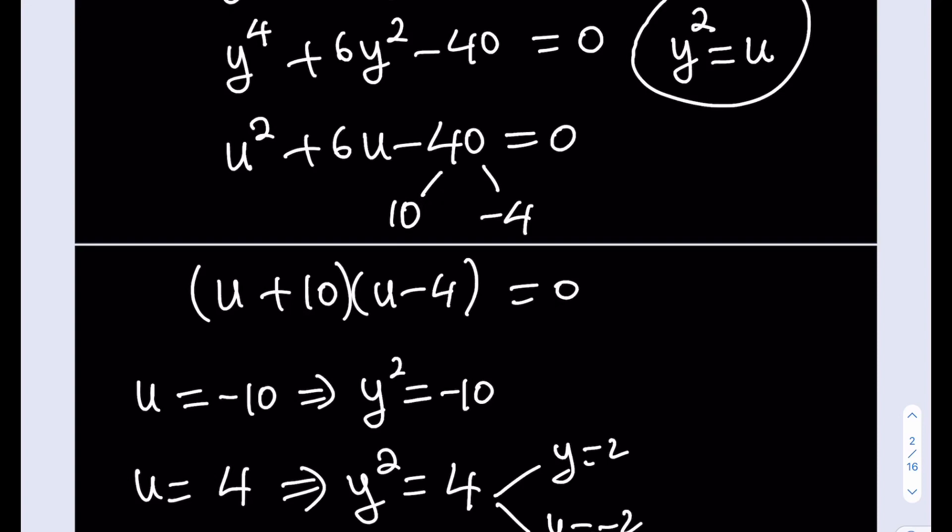But let's not just discriminate against complex numbers, right? From here, we're going to be getting square root of 10i and the opposite of that. So we got four solutions. Obviously, it's a quartic equation, right? Come on.